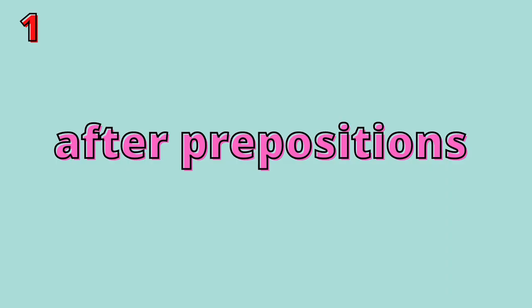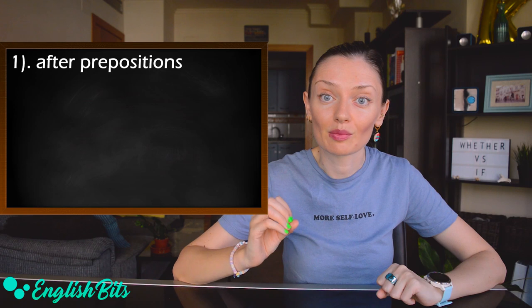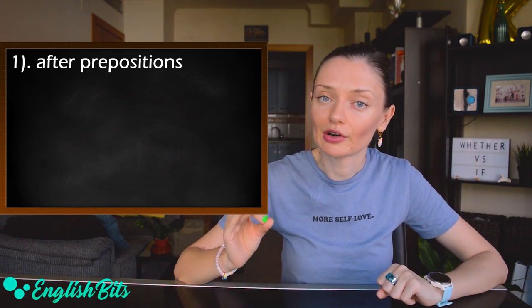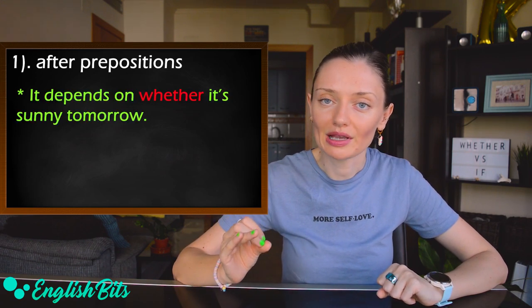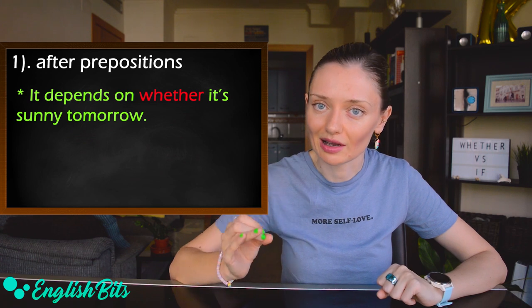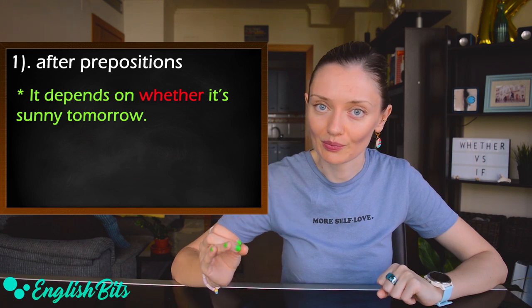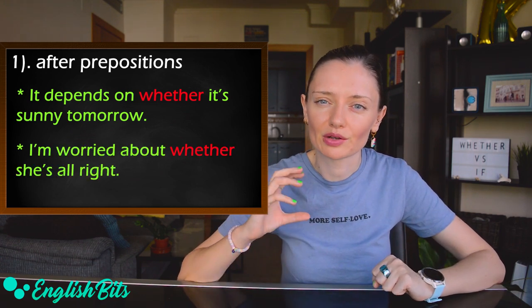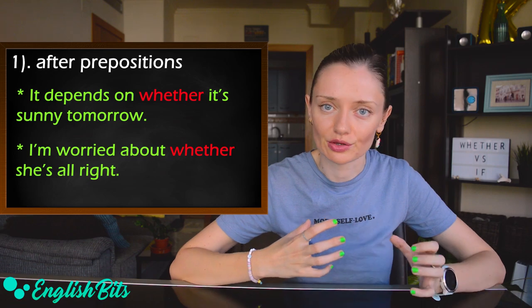And now we're going to look at when we can only use 'whether'. Number one: after prepositions. For example: 'It depends on whether it's sunny tomorrow.' And one more example: 'I'm worried about whether she's alright.'